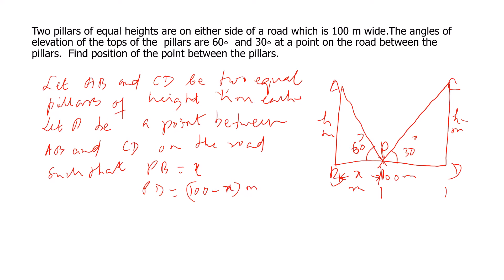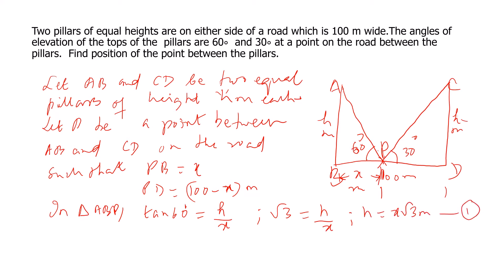We have two right triangles and will make use of trigonometric ratios. In triangle ABP, if I take tan 60, it will be equal to opposite by adjacent. Tan 60 is root 3, so root 3 equals h by x, or h equals x root 3 meters. This is equation number 1.